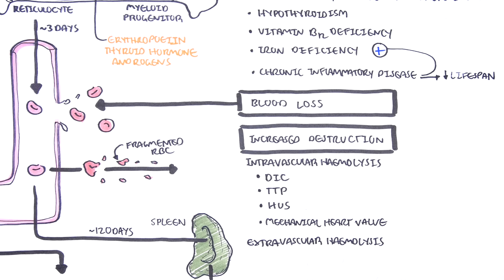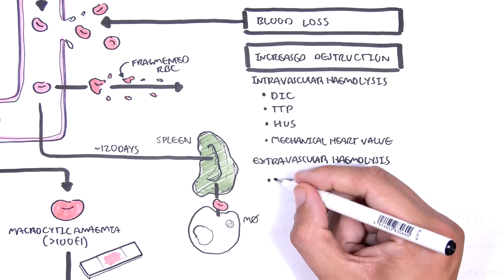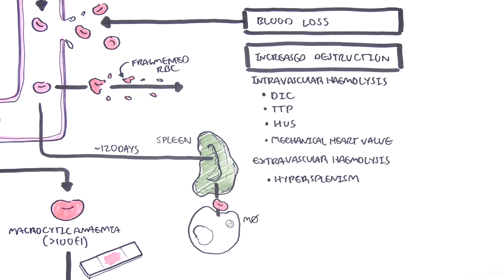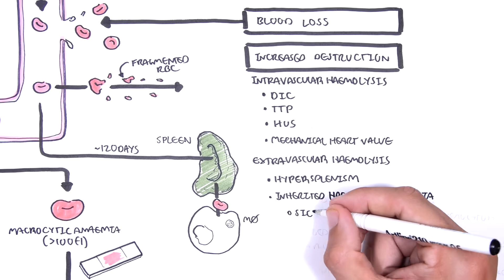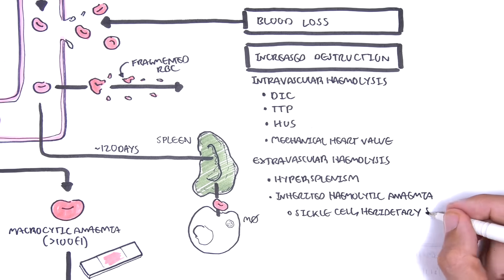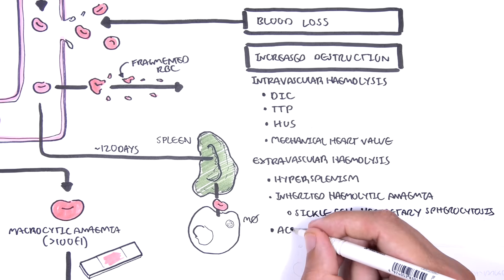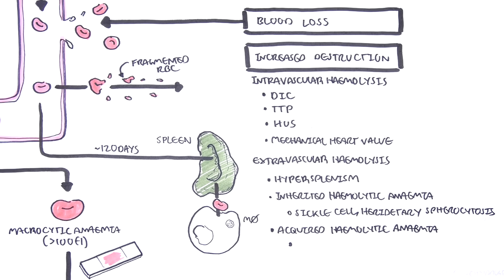Extravascular hemolysis occurs when there is increased destruction of red blood cells typically through the reticuloendothelial system. Examples include hypersplenism, inherited hemolytic anemia disorders such as sickle cell anemia and hereditary spherocytosis, and acquired hemolytic anemia such as malaria.